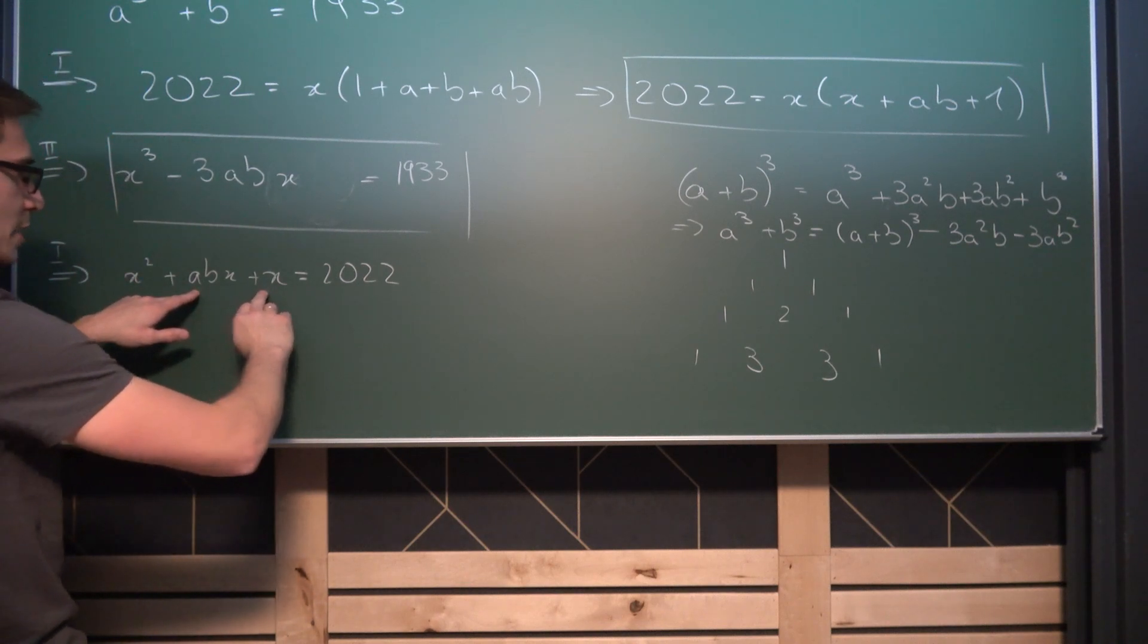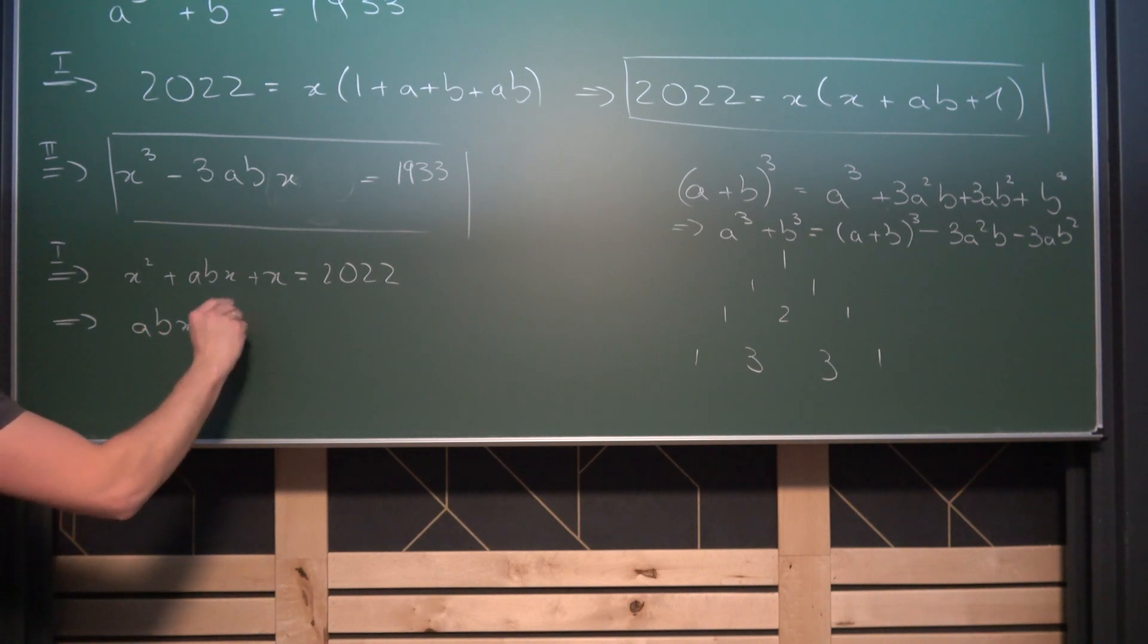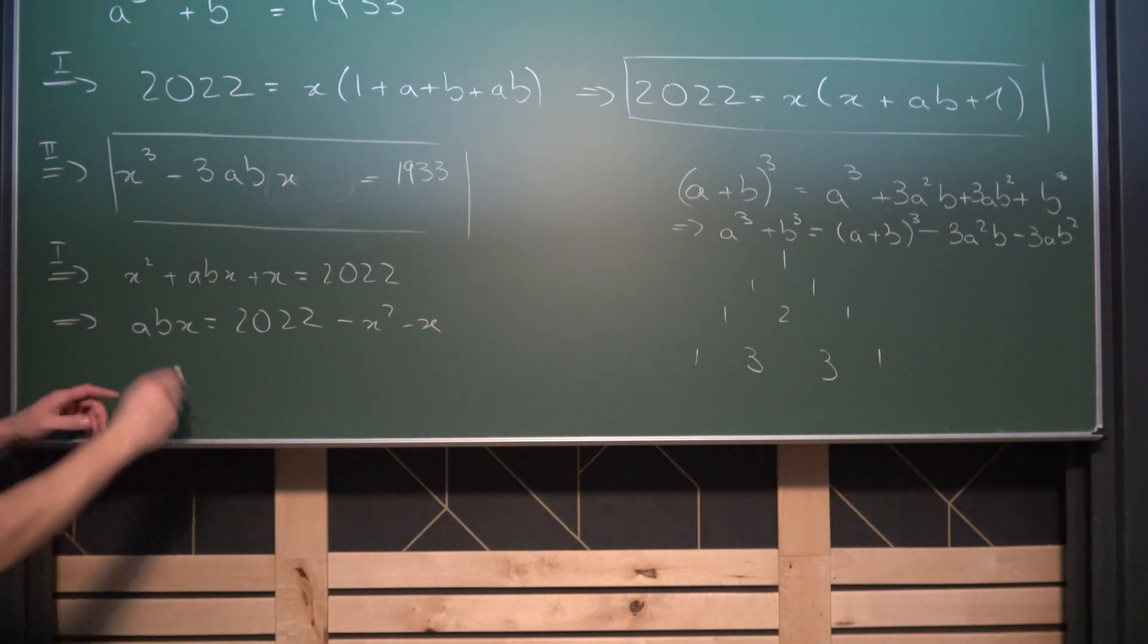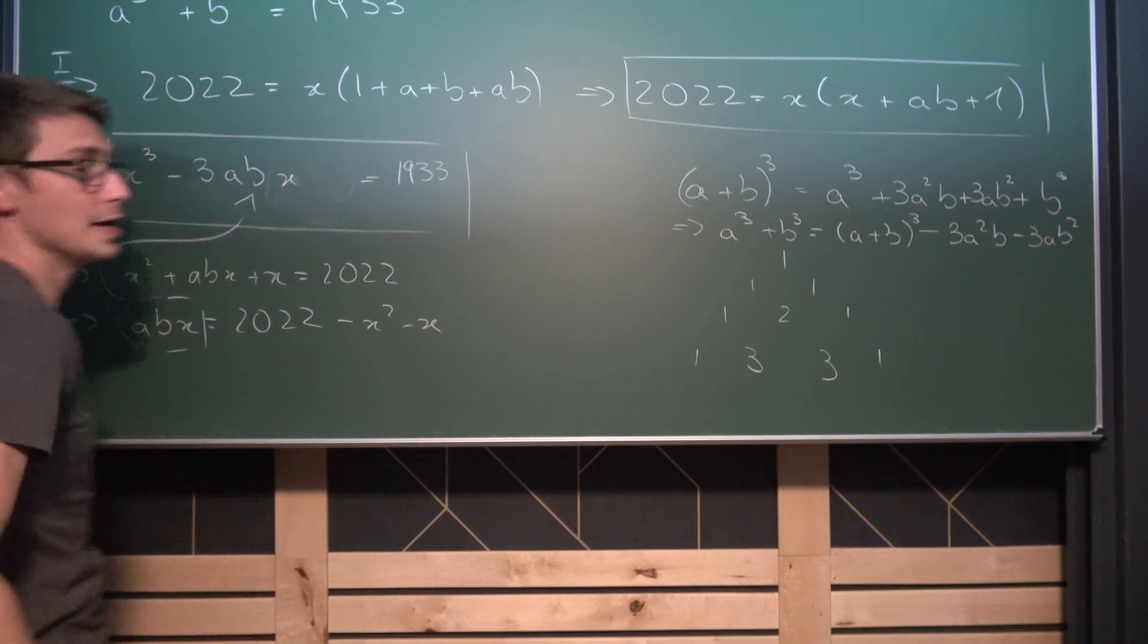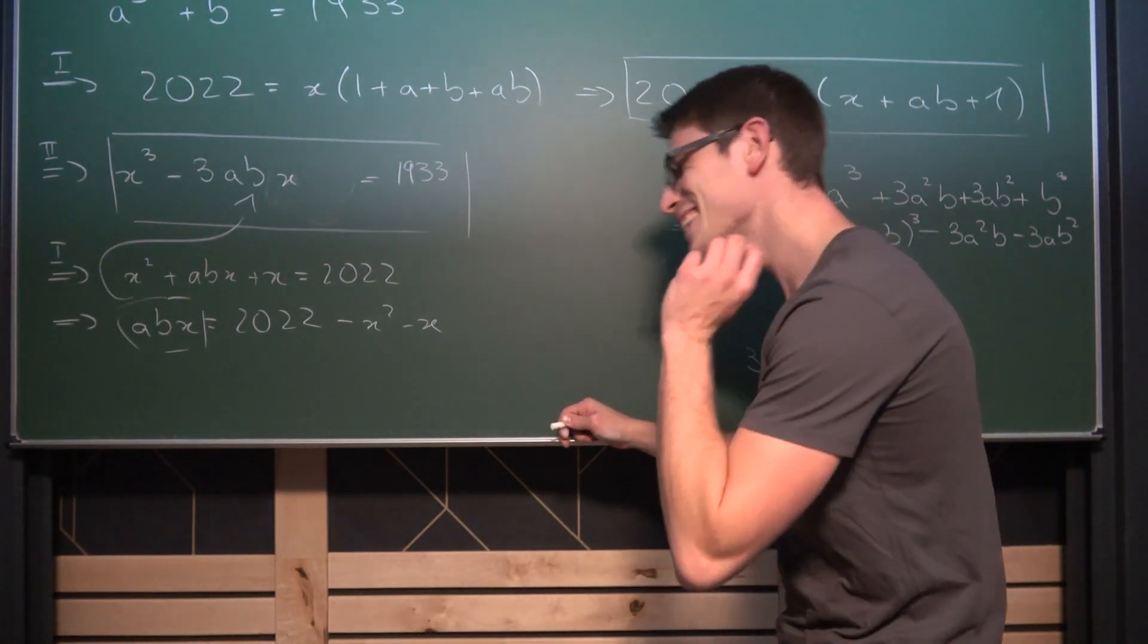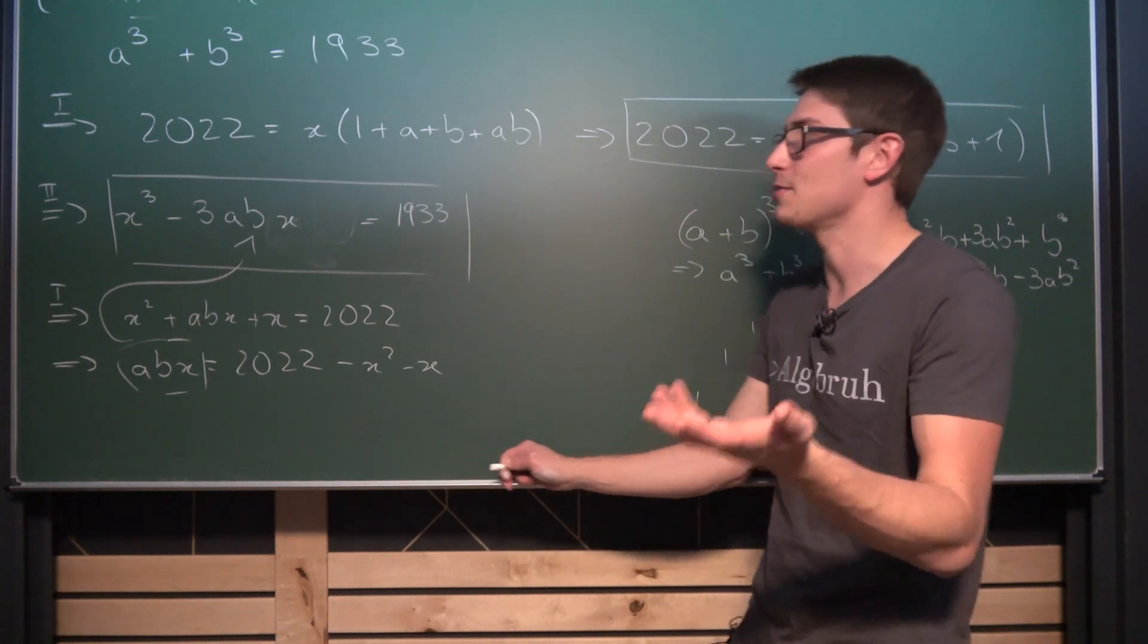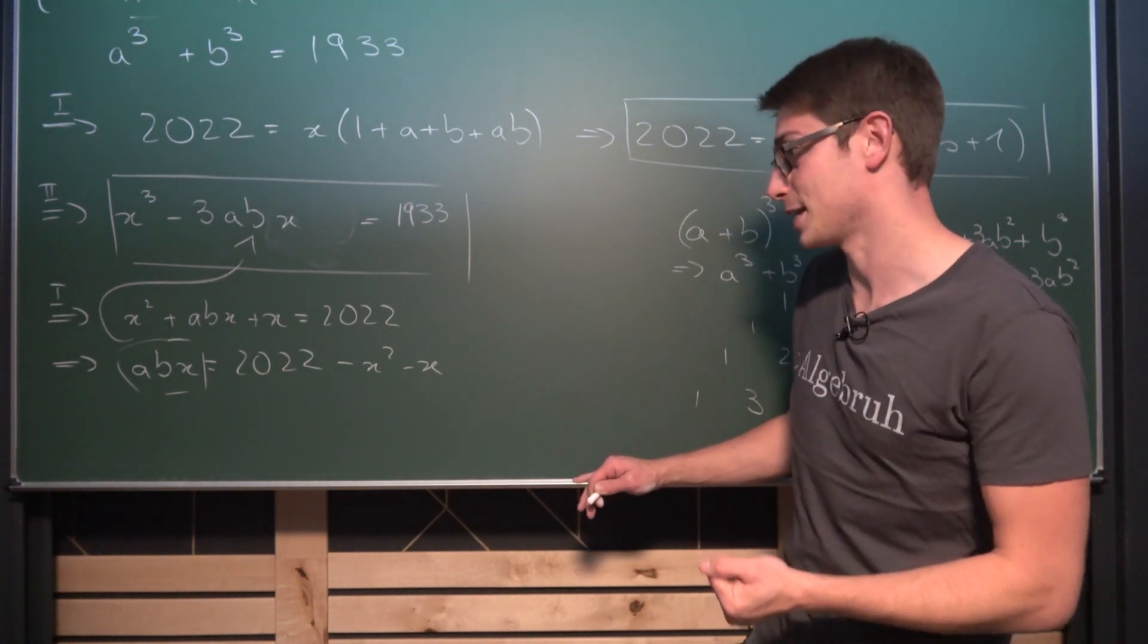Now we are going to solve the second equation or the first equation right here this one for abx. So meaning we are going to subtract x and x squared on both sides. We are going to get that abx is the same as 2022 minus x squared minus x. And now we can plug our abx into this equation and then we can start to solve a cubic equation. And this is where the real magic is going to happen. And this is what I really like about this problem and this is the only reason why I'm even presenting a problem like this here on this channel. Because the solution is quite nice actually.